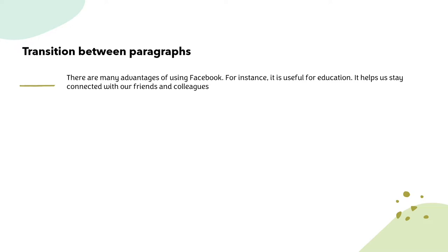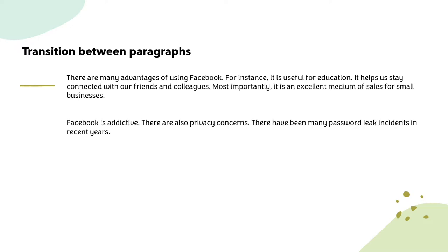Let's see an example: 'There are many advantages of using Facebook. For instance, it is useful for education, it helps us stay connected with friends and colleagues, and most importantly it is an excellent medium of sales for small businesses. Facebook is addictive. There are also privacy concerns. There have been many password leak incidents in recent years.' Both paragraphs talk about Facebook, but the second suddenly shifts to a negative tone without context — jumping from advantages to disadvantages abruptly. To fix this, replace those sentences with a transitioning sentence: 'However, there are disadvantages too — the first being that it is addictive. Moreover, there have been many password leak incidents in recent years.'